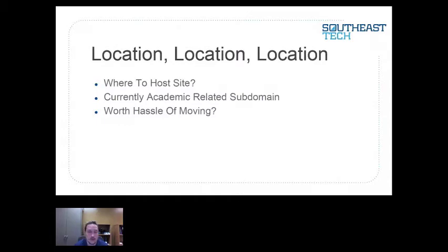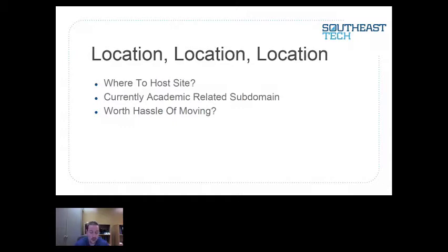Now — location, location, location. Where do we host the WordPress site? Right now it's on an academic-related subdomain that actually has 'academic' in the title. That might not be very inclusive to everybody on our campus — a staff member going on and seeing that might think 'that's for academics, not for me.' So we want to include everybody, but is it really worth the process of moving? When people access it, they'll be going through a link in our CMS, an email, or an Outlook calendar — they're probably not looking at the URL to begin with. So is it really worth the hassle of moving it?